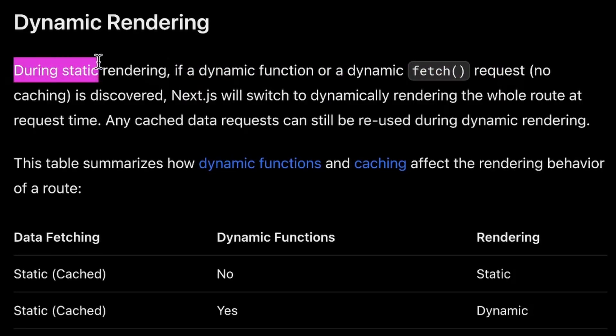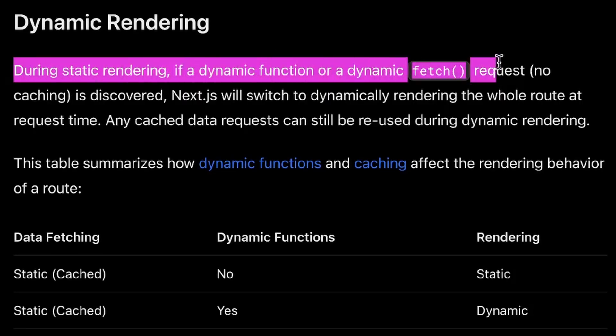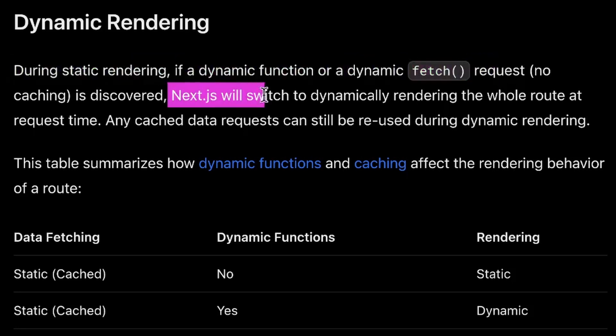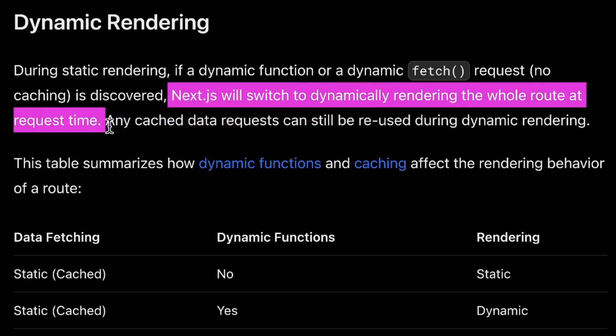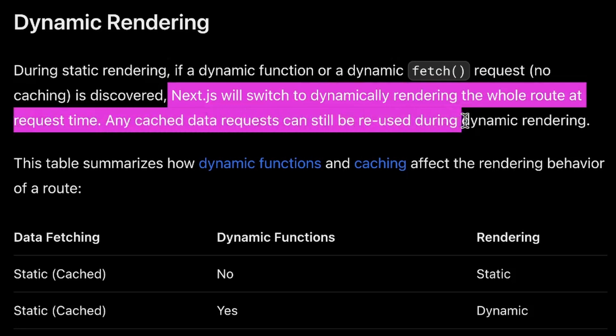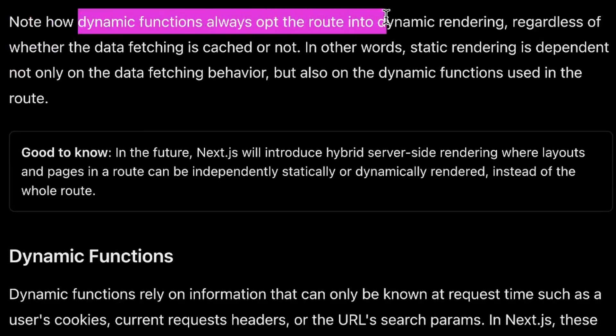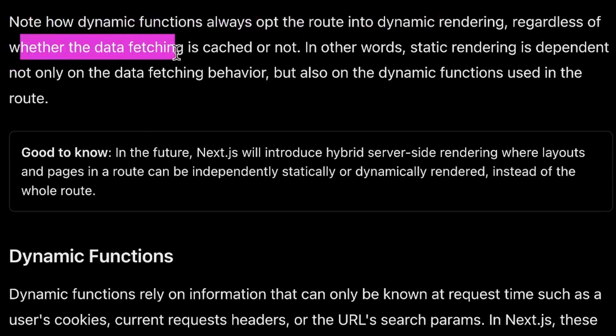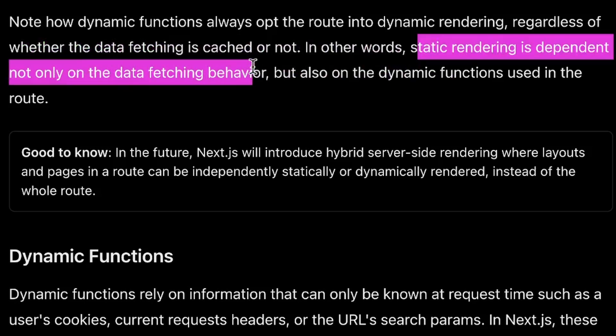We also have dynamic rendering. During static rendering, if a dynamic function or a dynamic fetch request is discovered, Next.js will switch to dynamically rendering the whole route at request time. Any cached data requests can still be reused during dynamic rendering. So if you have a dynamic function or a dynamic fetch request within one of your routes, it's going to change that entire route to being dynamically rendered at request time rather than build time. Dynamic functions always opt the entire route into dynamic rendering, regardless of whether the data fetching is cached or not.